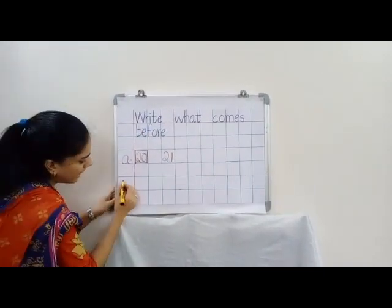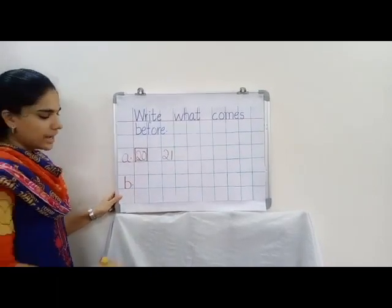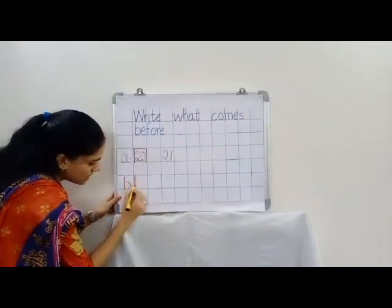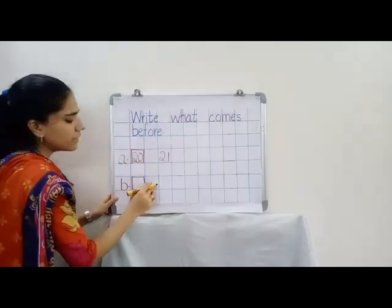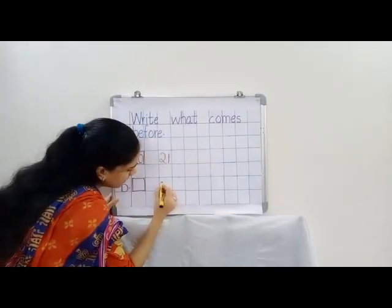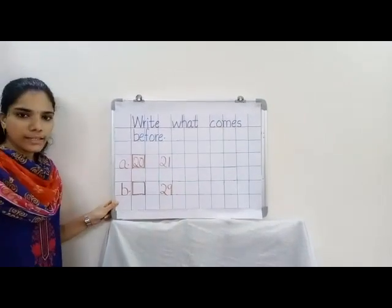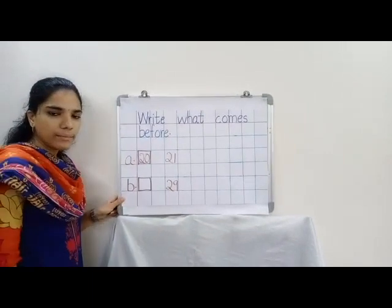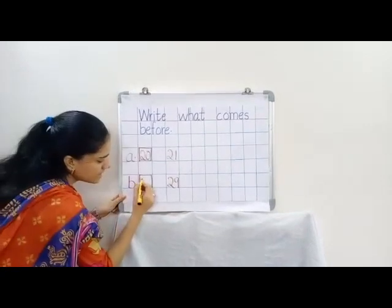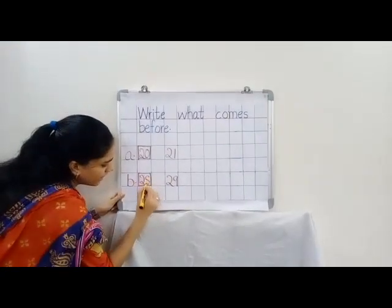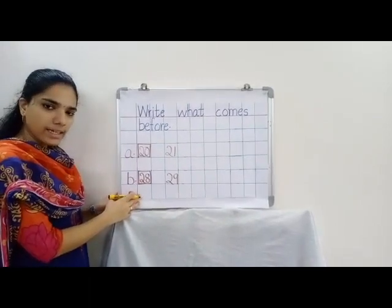Okay children. Now leave one line and write small b dot. Again draw one box here, leave one box and write 29. Now tell me which number comes before 29. Yes, it is 28. Yes children, did you understand?